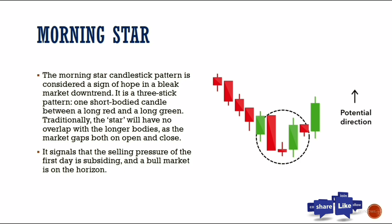Next is the morning star, which is considered a sign of hope in a market downtrend. It is formed with three candles: the first is a long red candle, the second is a small-bodied candle in the middle (the star), and the third is a long green candle. Traditionally, the star has no overlap with the longer bodies. When you see this on the chart, it indicates buyers coming in with potential direction to the upside.